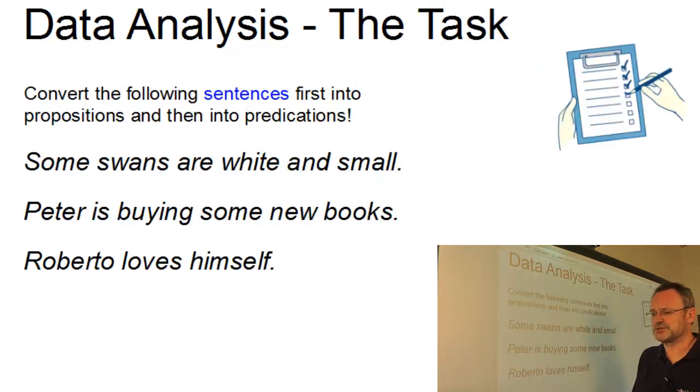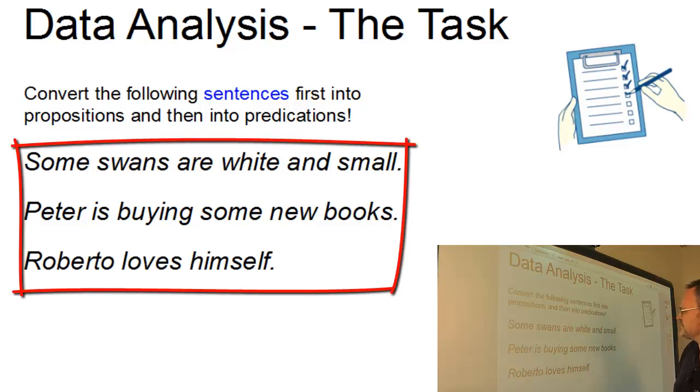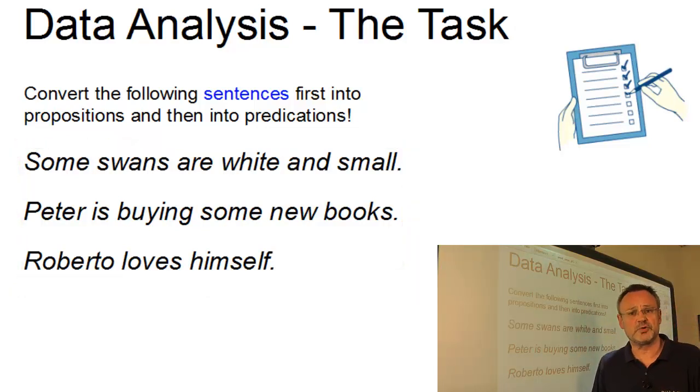And this is our task. We have to convert the three sentences, some swans are white and small, Peter is buying some new books and Roberto loves himself, first into propositions and then into their predications. If you want to try on your own first, pause the video here and compare your solutions with mine later on.